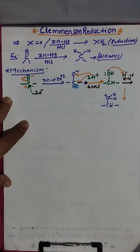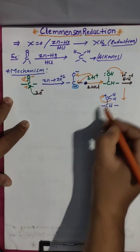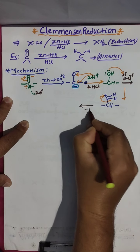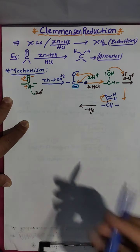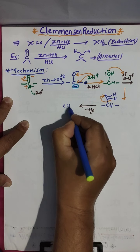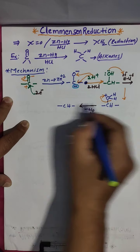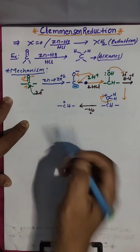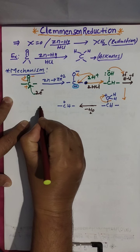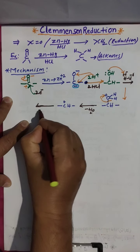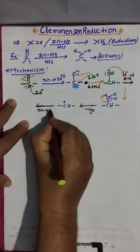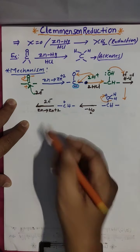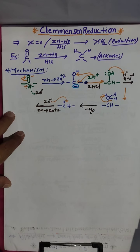The positive charge on oxygen makes it unstable, so the water molecule is eliminated. By elimination of the water molecule, carbon loses an electron and gets a positive charge — a carbocation. Again zinc comes into action, forming Zn²⁺ and donating two electrons to neutralize the positive carbon.